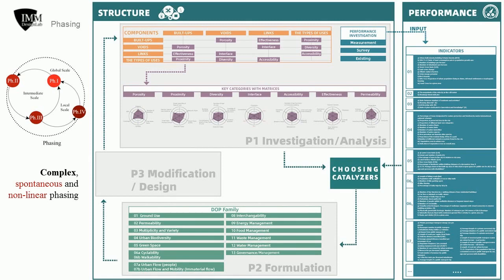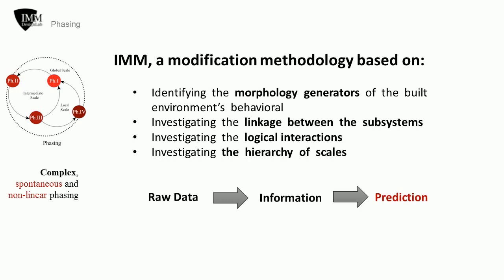In the third phase, modification scenarios are being tested with the same means that the actual context was investigated. The last phase is dedicated to overall optimization through the definition of local retrofitting strategies. IMM is a modification methodology based on: identifying the morphology generators of the built environment's behavioral patterns, investigating the linkage between the subsystems, investigating the logical interactions, and investigating the hierarchy of scales.